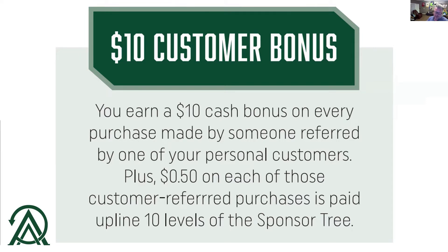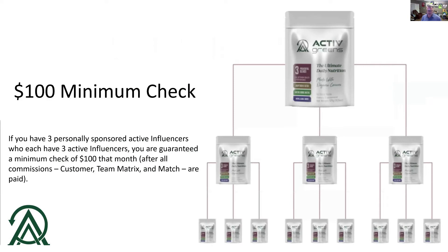The next part we're going to talk about is influencers. Influencers are people that we pay to recommend our product to their center of influence — through social media, talking to somebody, email, texting, inviting people to a webinar like this. To become an influencer, you purchase the product for $49.95, which makes you an active influencer. The next thing is you want to refer as many people as it takes to find three, and then help them do the same thing.